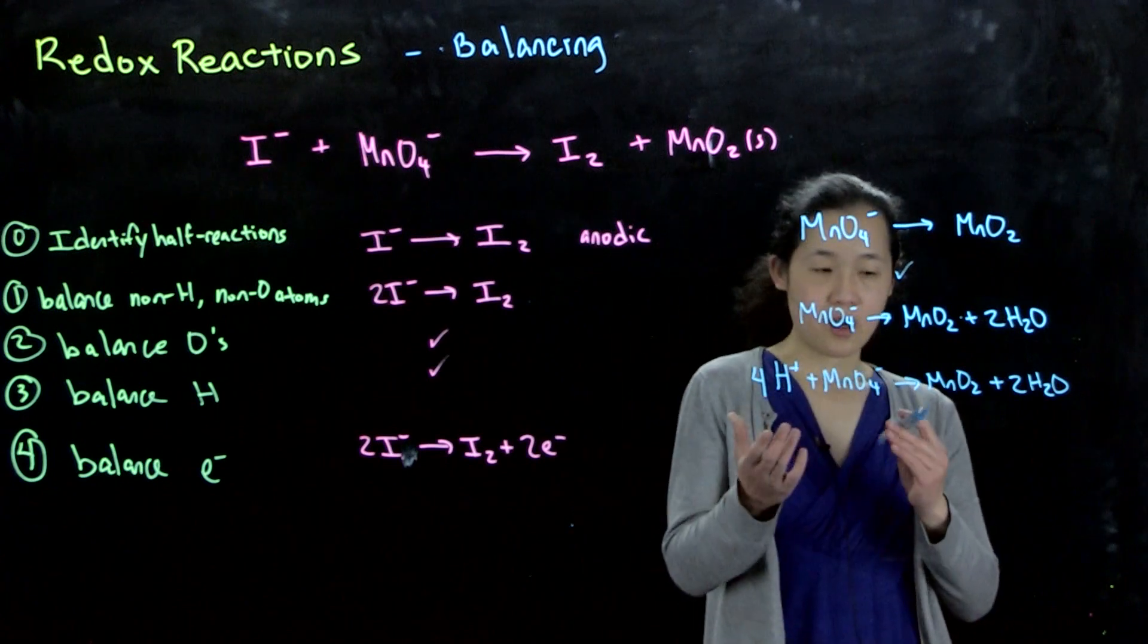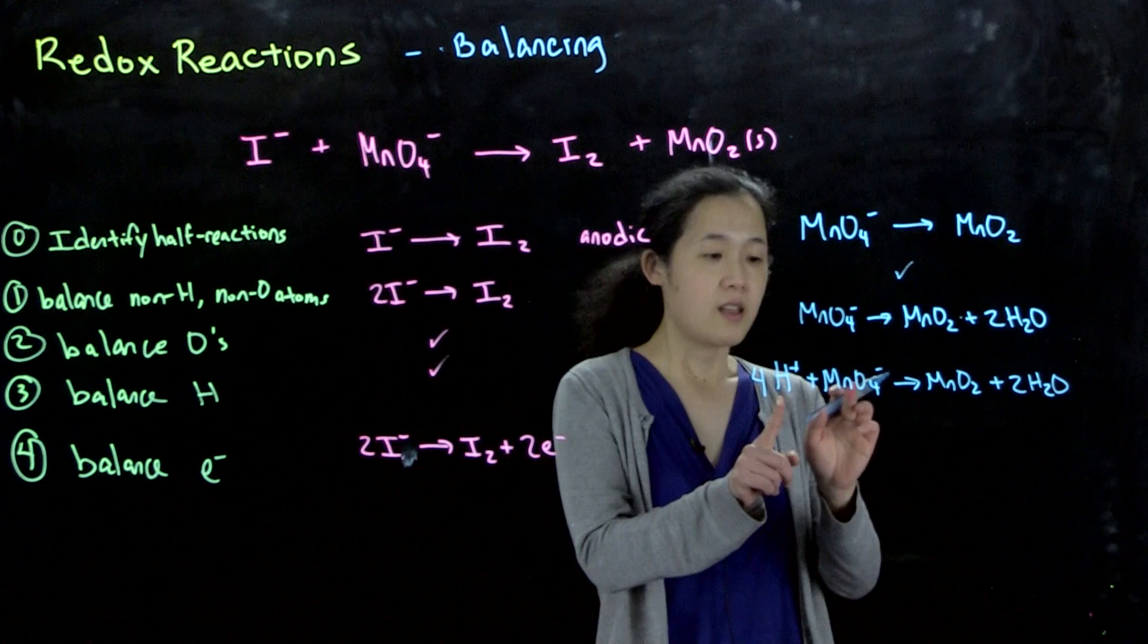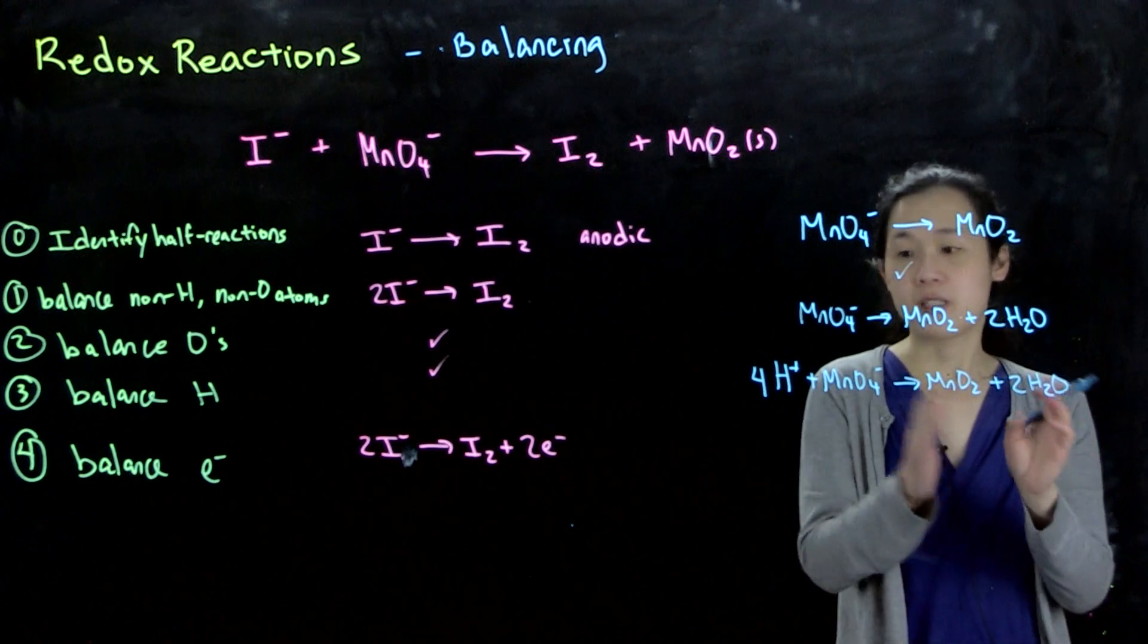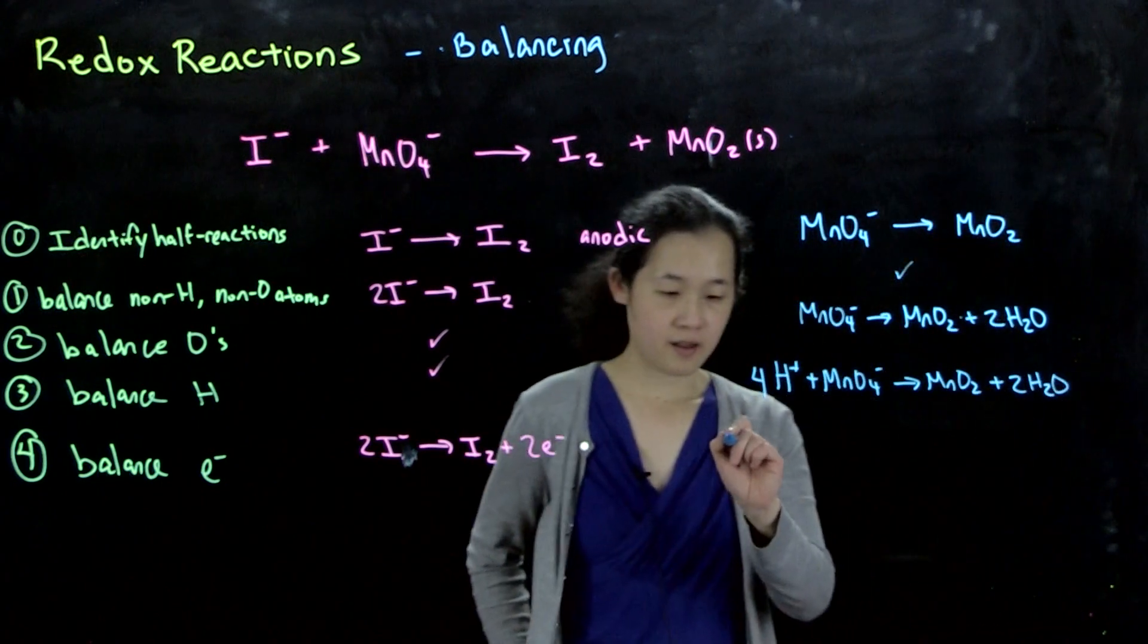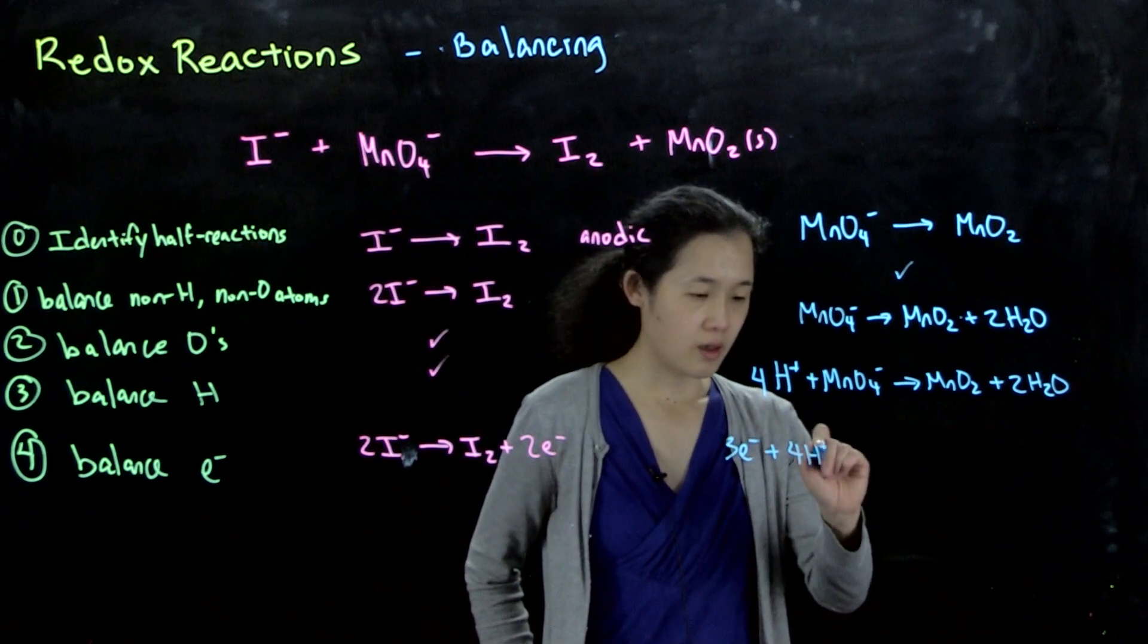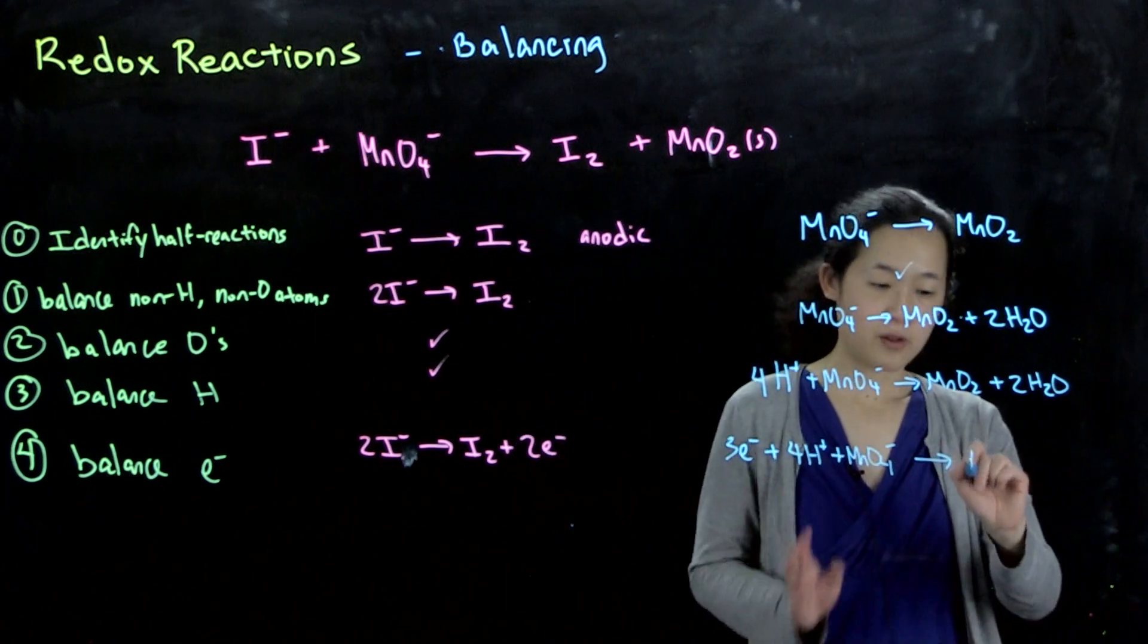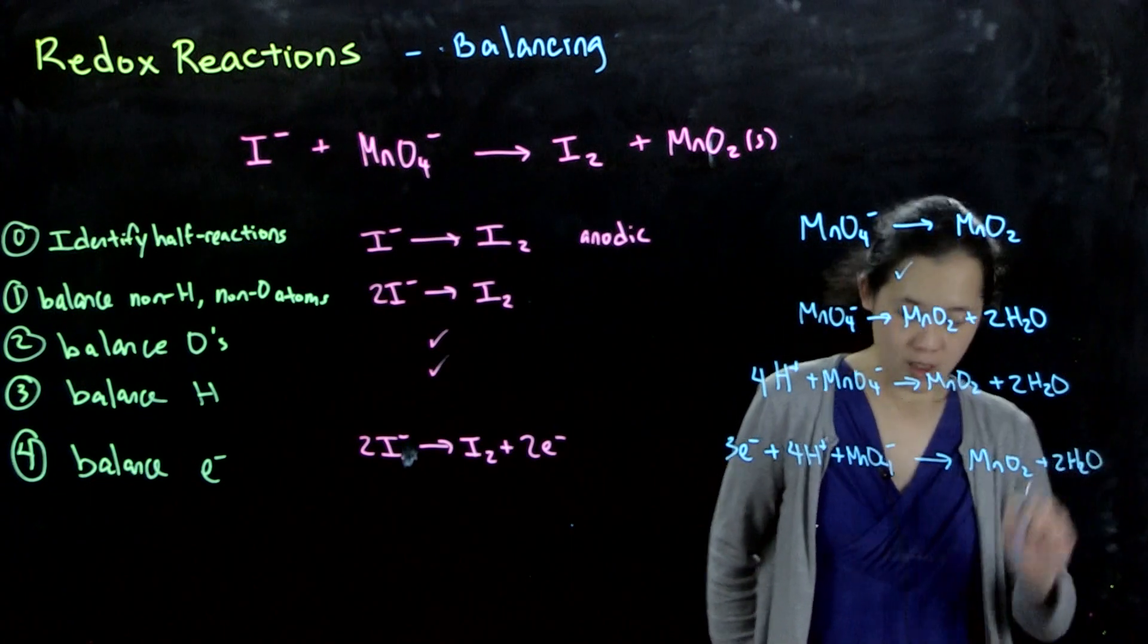And then here again, we balance out charge. Here we have four H⁺ and one minus (from MnO₄⁻), so overall this is 3+ over here. Over here we have all neutral species, so it's zero. To balance out this 3+, we have to add three electrons to the left side. And that way, both sides will now be neutral.